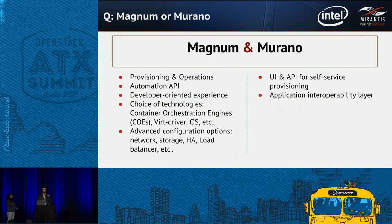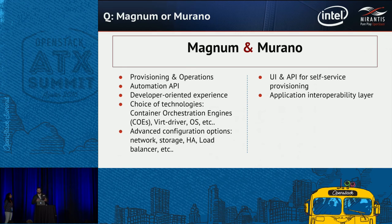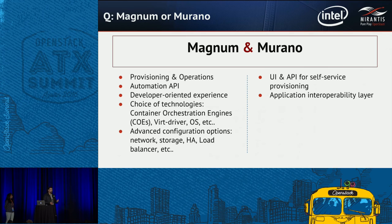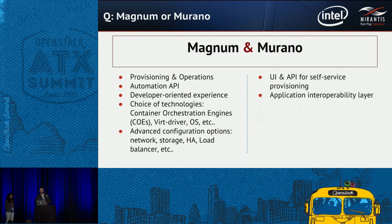So the answer to the question: not Murano or Magnum — Murano and Magnum. Murano gives you a UI for end users to provision applications, an API for self-service provisioning, and an application API for other applications to interact with your catalog. Magnum gives you provisioning and operations, automation API, developer experience, and a choice of technologies for deploying different container orchestration engines — and constantly improves how those configurations are deployed. If you need an application in your cloud and it doesn't have a service like Magnum, Murano can easily automate it for you.